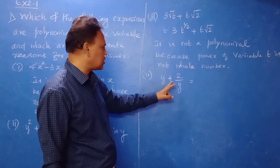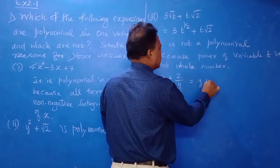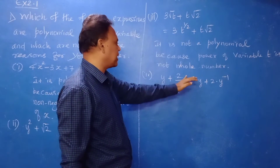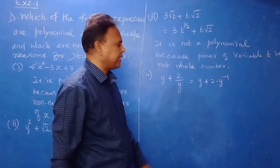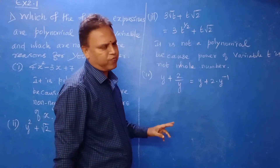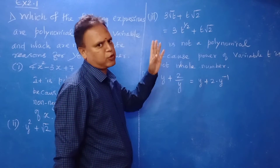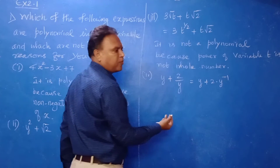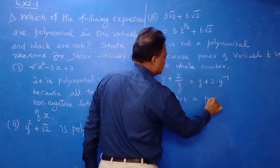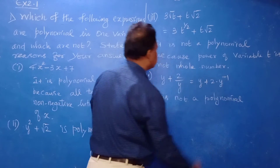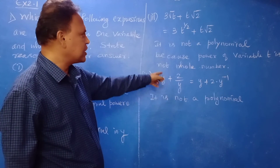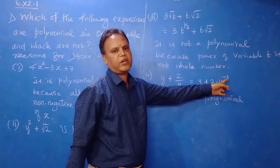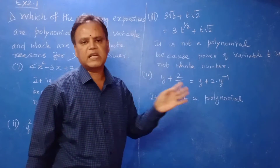Fourth: y plus 2/y. This can be written as y plus 2 times y power minus 1. Therefore it is not a polynomial. The power of variable y is not a whole number because it is negative. We apply laws of exponents: bringing y from the denominator to the numerator gives a negative power.